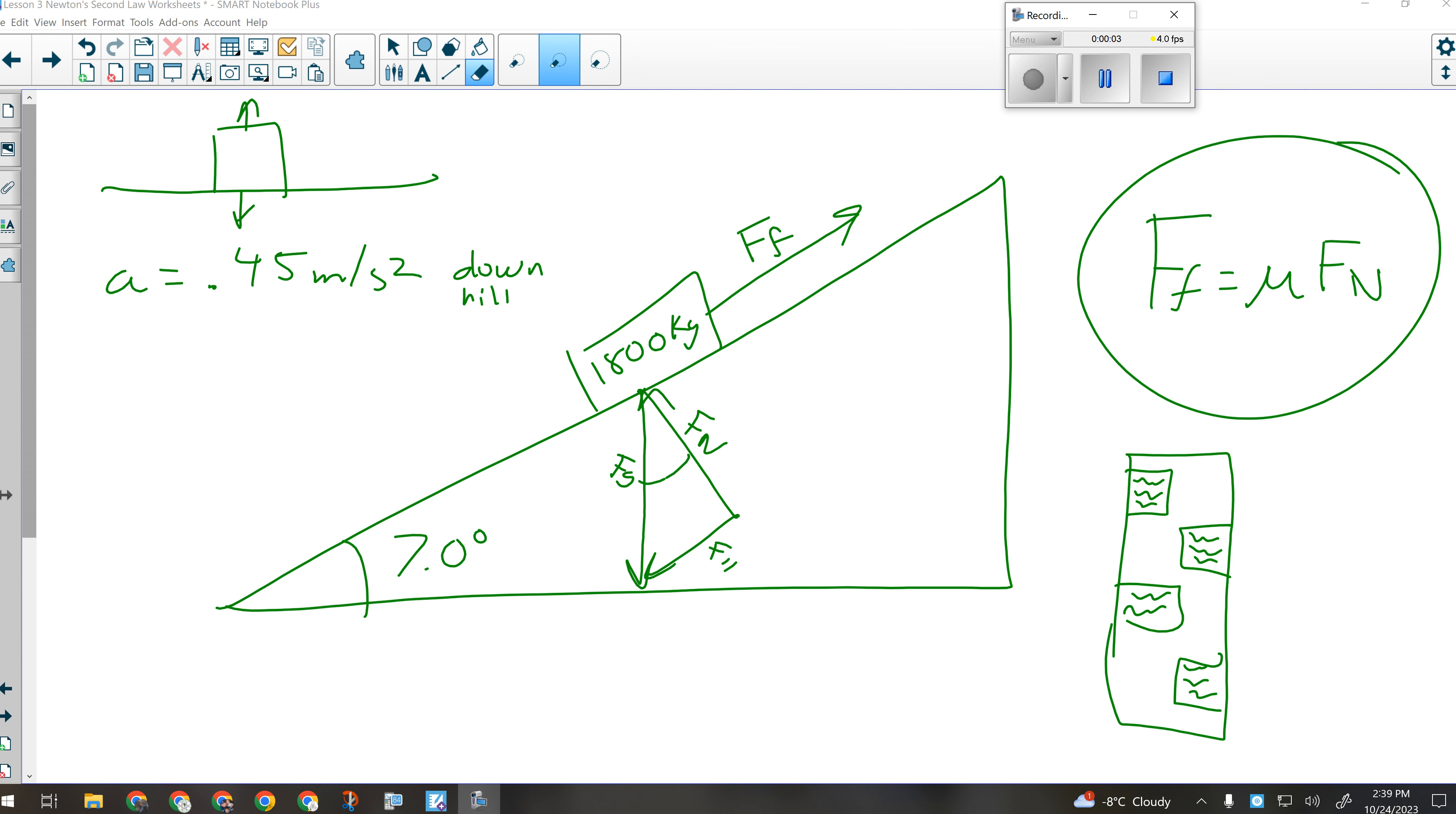All right, so the Northridge Drive fiasco from last night. We have an 1800 kilogram car. We're trying to find the force of friction acting up Northridge Drive knowing that the cars were accelerating down at 0.45 meters per second squared.